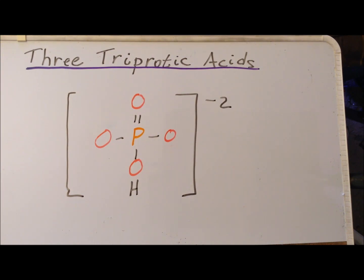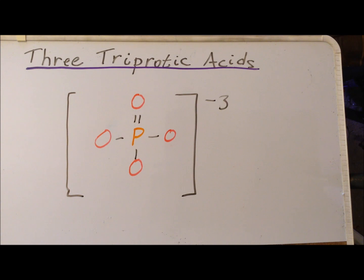If phosphoric acid loses a second acidic proton, we now have the hydrogen phosphate ion with a minus two charge. When phosphoric acid is completely deprotonated, we now have the phosphate ion with a minus three charge.